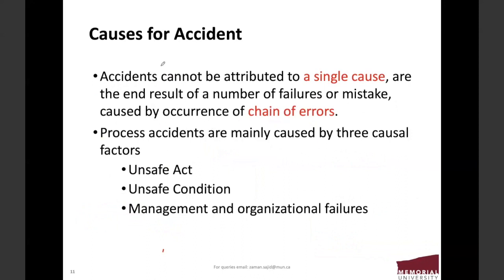In order to understand the causes of an accident, you must understand that an accident cannot be attributed to a single cause. There is no one reason for an accident. It is the failure or mistake caused by a chain of errors. A combination of events leads to an accident, not a single cause. Process accidents are mainly caused by three factors: unsafe act, unsafe condition, and management and organization failure.